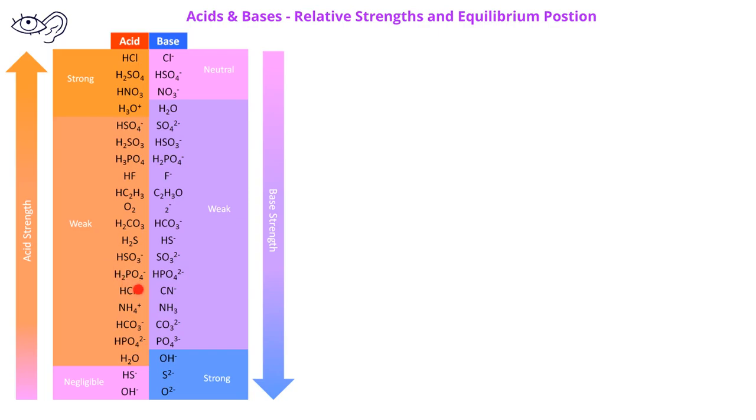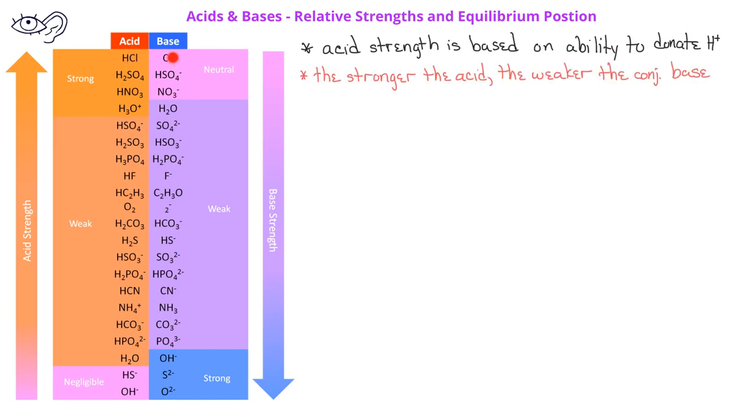The figure here demonstrates that we can have relative acids and base strengths, depending on where they fall on the table. The stronger the acid, for example hydrochloric acid, the weaker is its conjugate base.